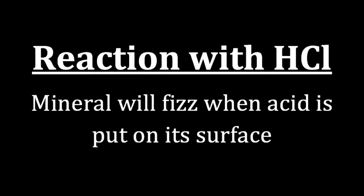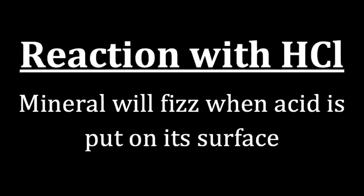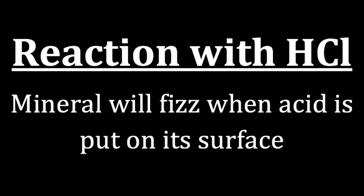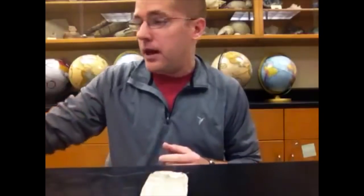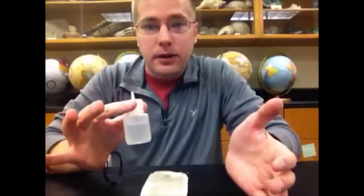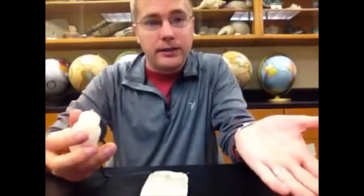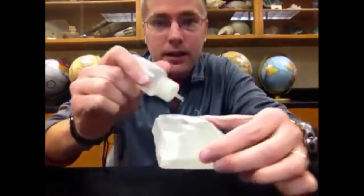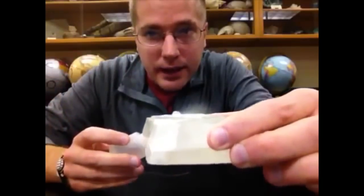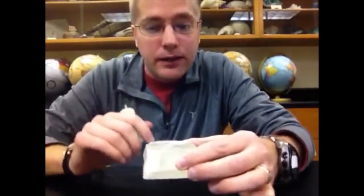We also have special properties that only a few minerals exhibit. The first is a reaction with hydrochloric acid. If we put hydrochloric acid on the surface of the mineral and it reacts, it'll look like fizz. This is a very special property because very few minerals actually do this. We use a very dilute hydrochloric acid, meaning if you get it on your hands it's not a strong enough concentration to do major harm. When we put this dilute hydrochloric acid on the mineral, you can see that it's actually fizzing — it's effervescing. When you see this in the lab book, effervescence means fizz.